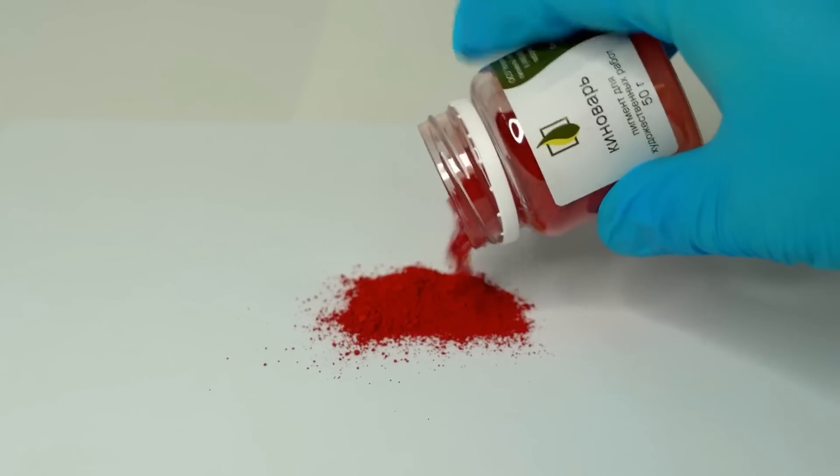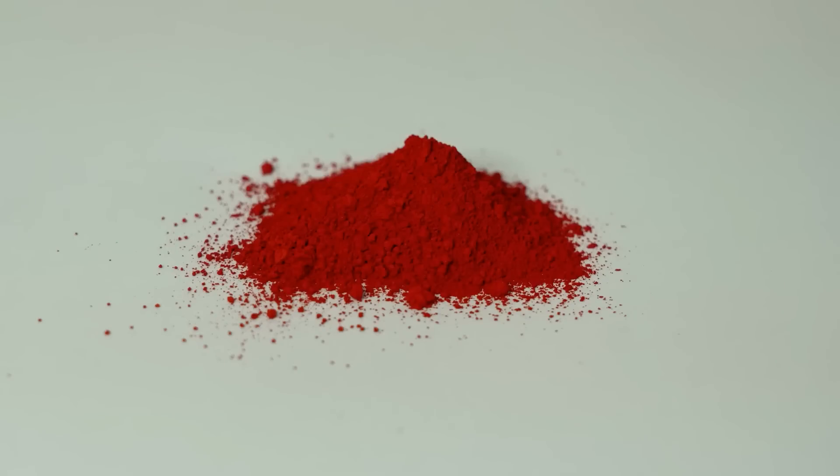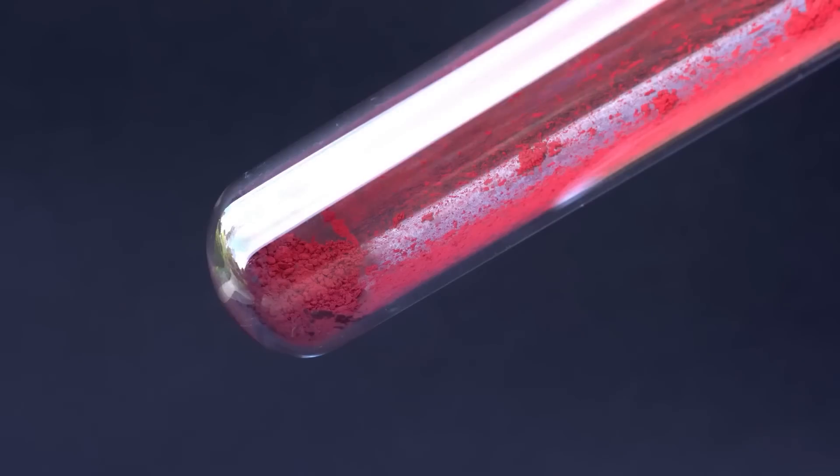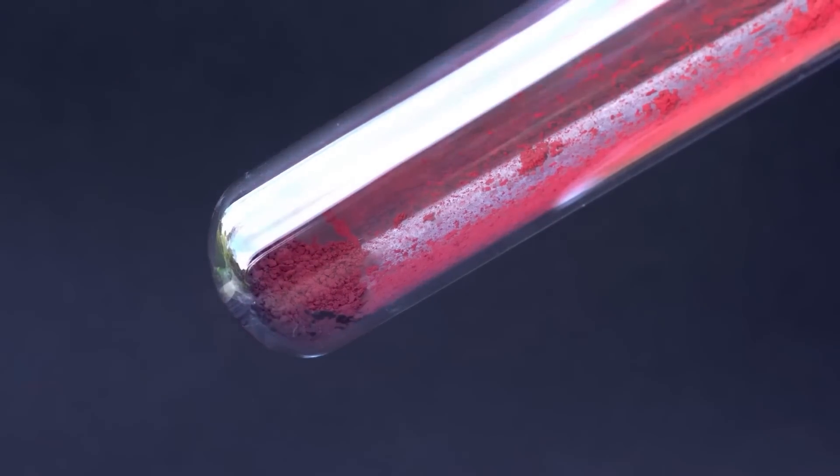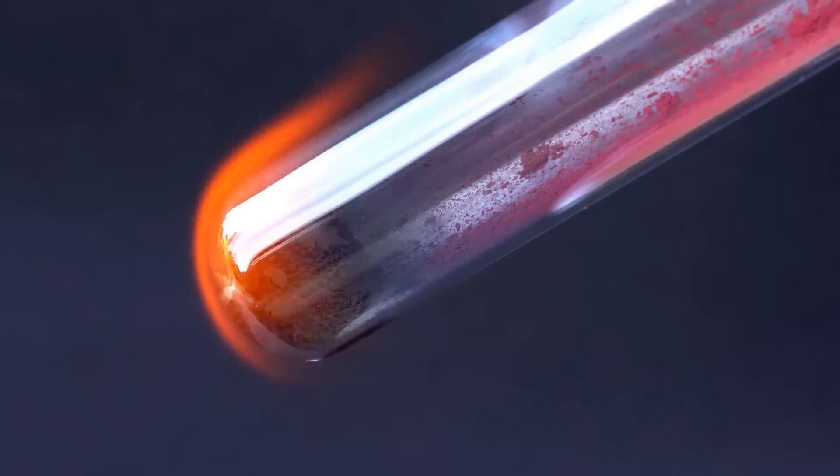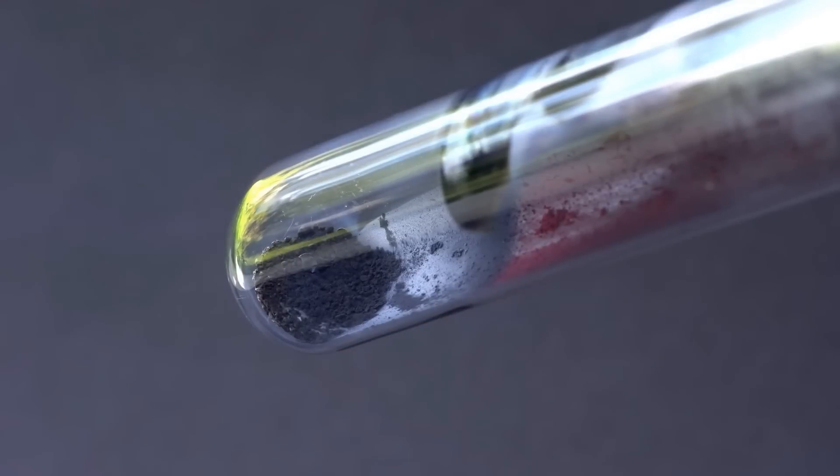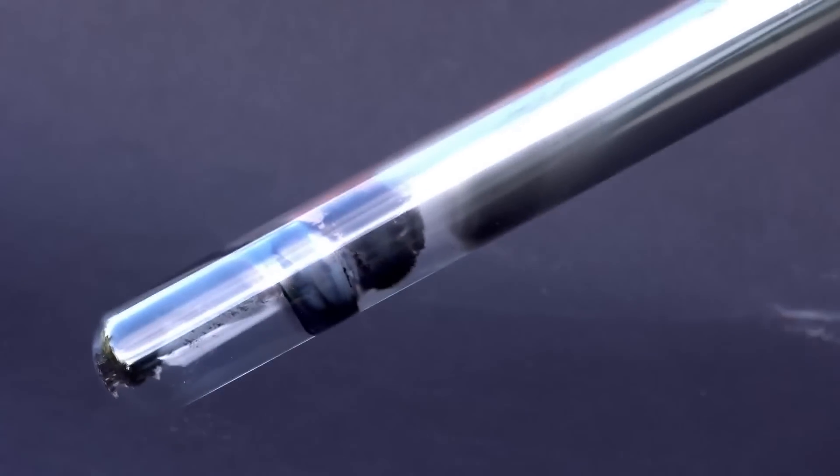Working with such a pigment is very dangerous. Since it contains mercury, this substance is very toxic, but still not as dangerous as mercury itself. By the way, it can be easily obtained from cinnabar powder by simple heating. At high temperatures, mercury sulfide decomposes into sulfur and elemental metallic mercury, which easily evaporates and settles on the cooler walls, creating a beautiful mercury mirror.